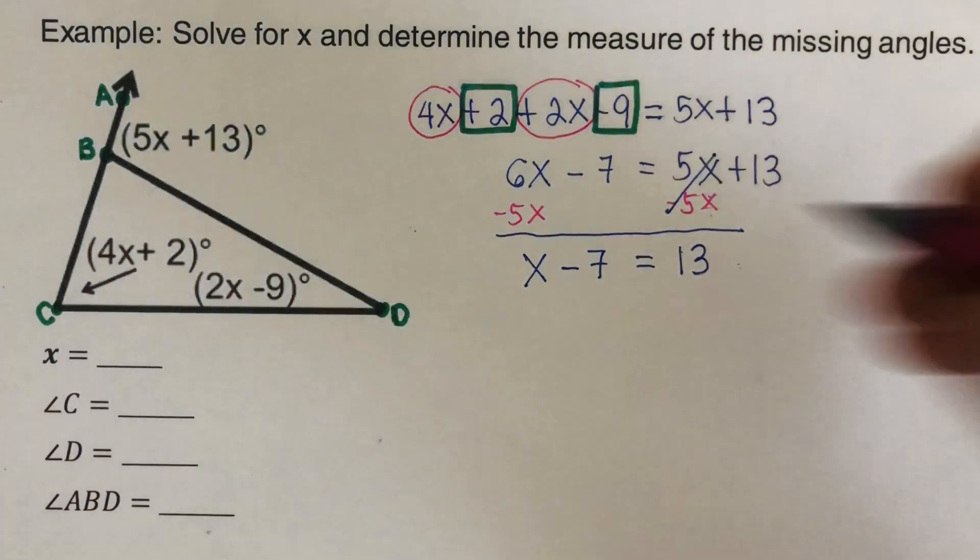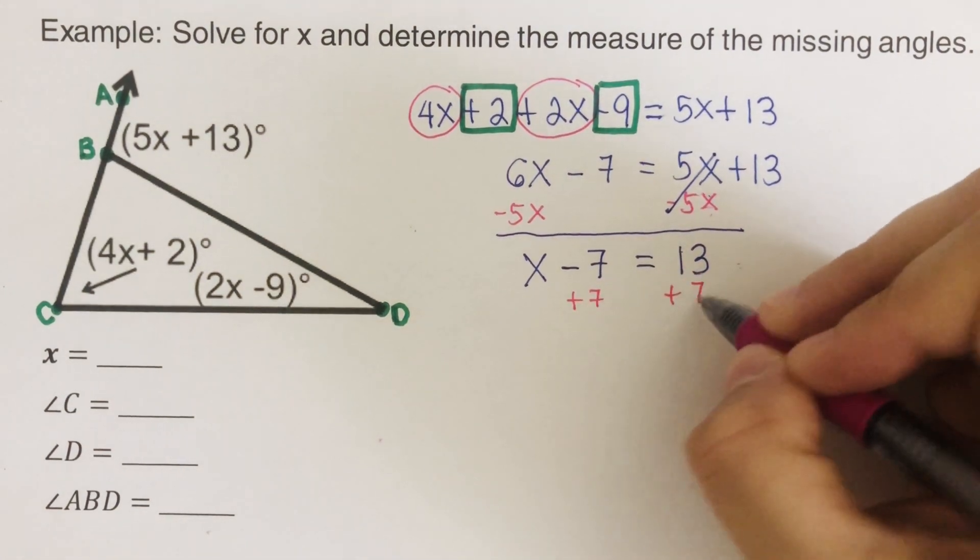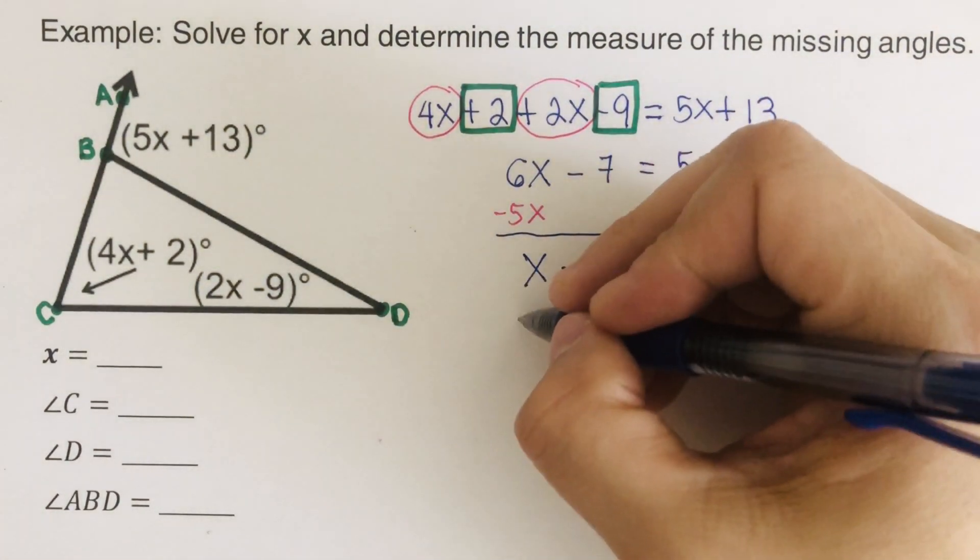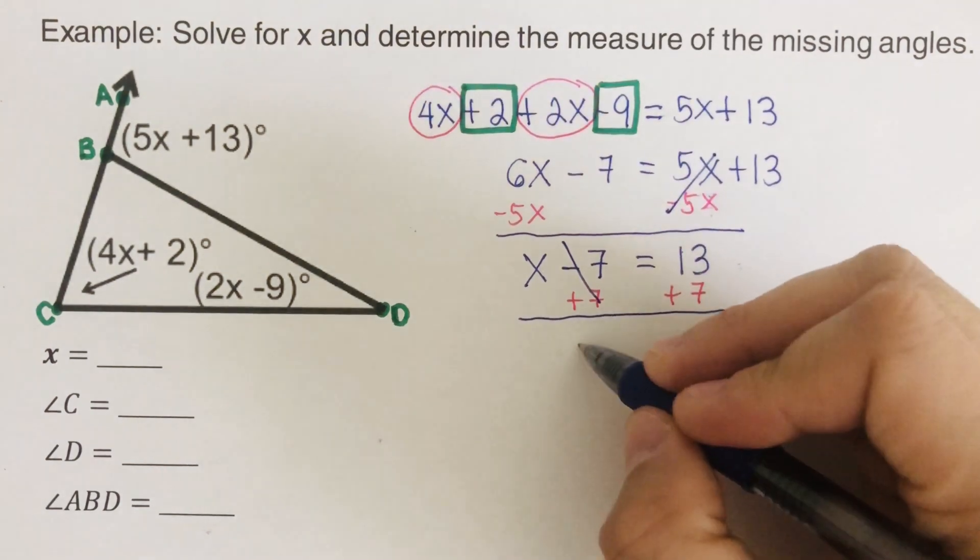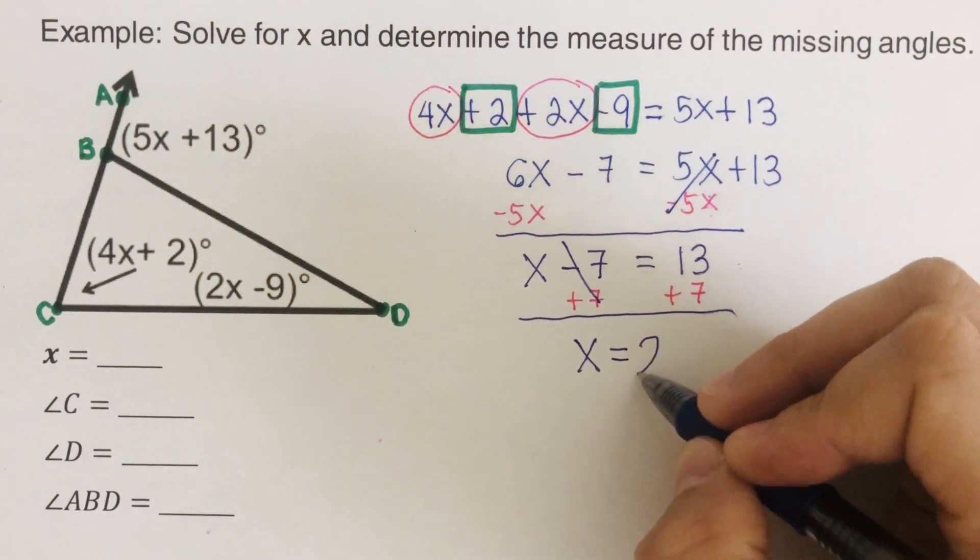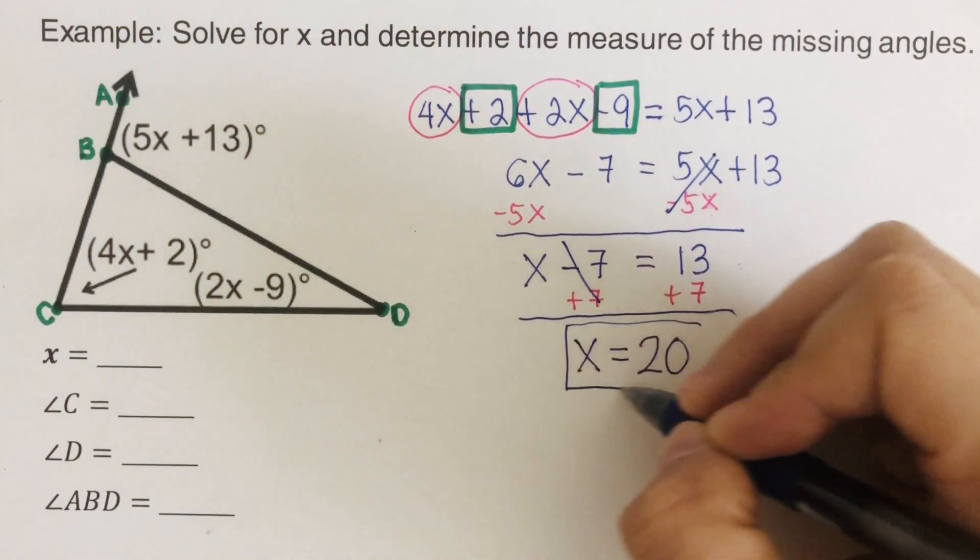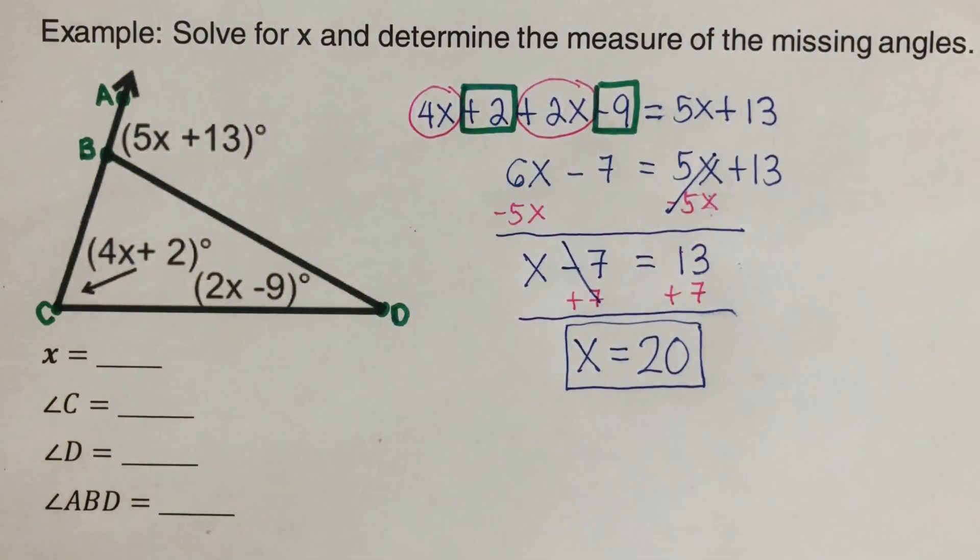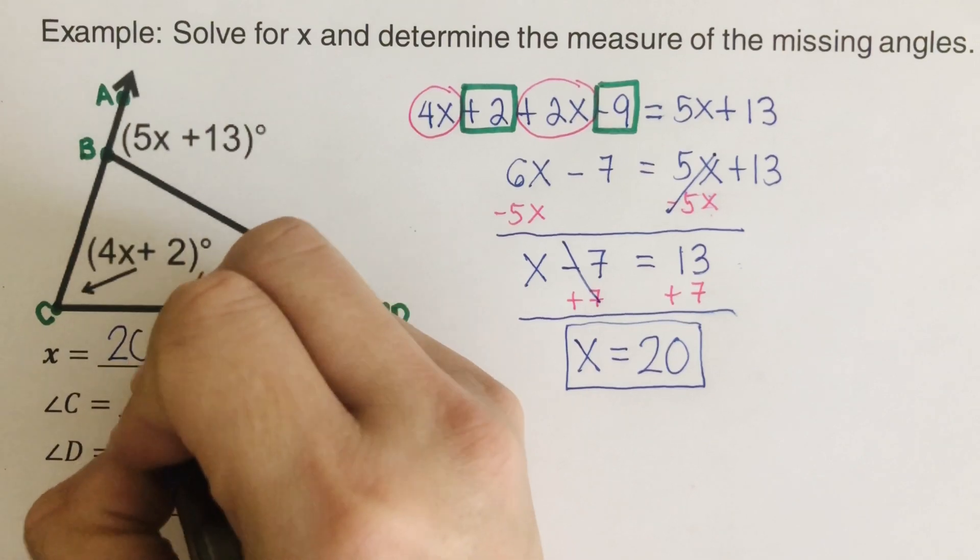So I can just go ahead and write x minus 7 equals 13. And so from here, I'm going to add 7 to both sides. So plus 7 and plus 7 here. So this one gets crossed out. So our x is 20. So that is the value of x. Did you get the same answer as this? 20? Good. Perfect. So the x here is 20.